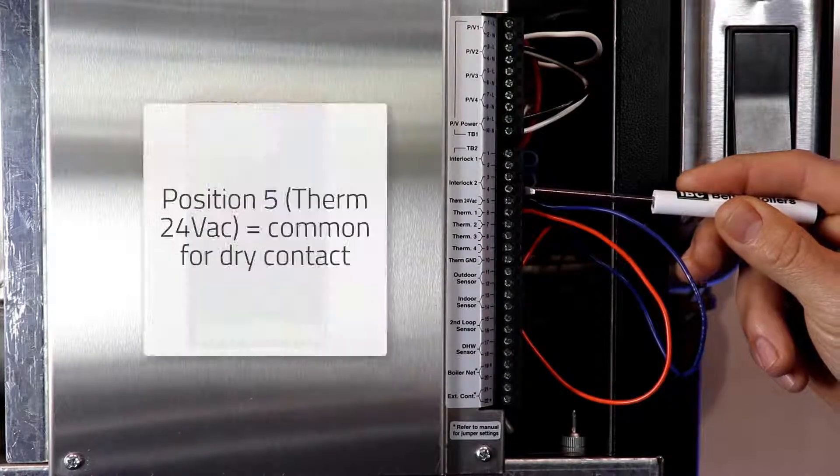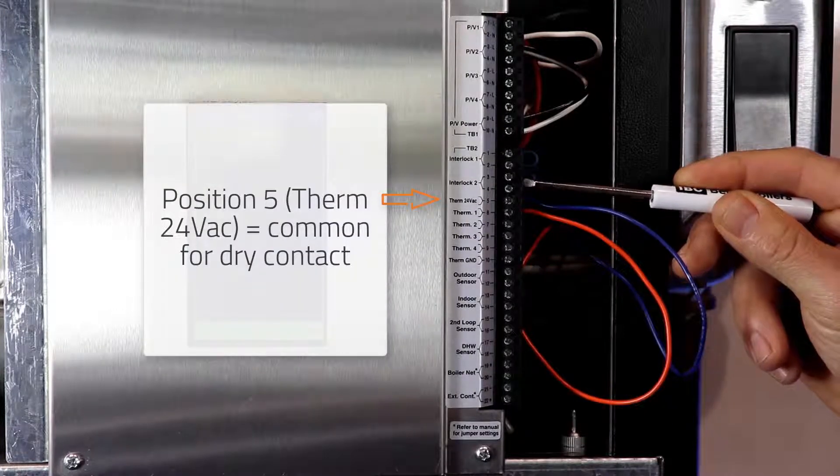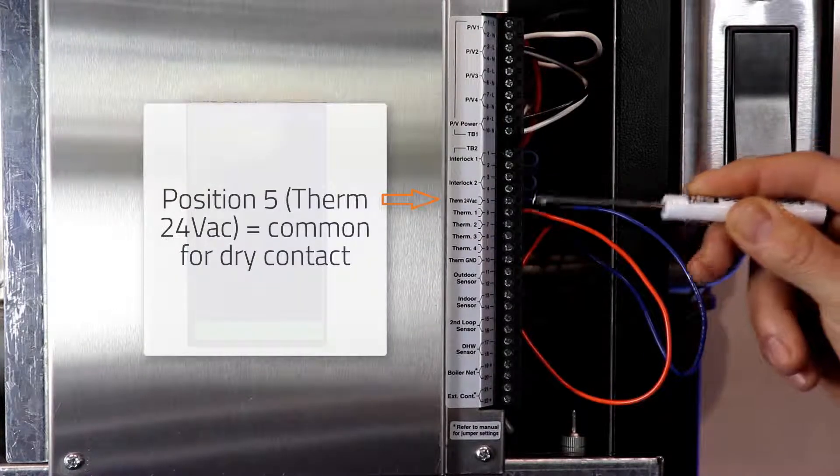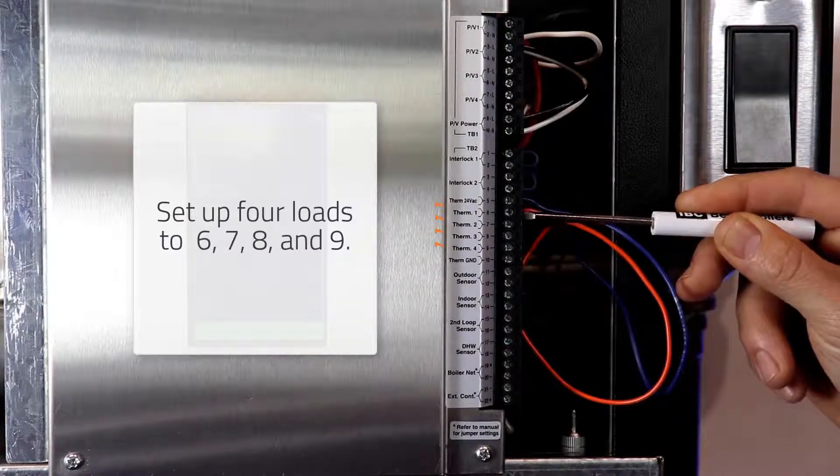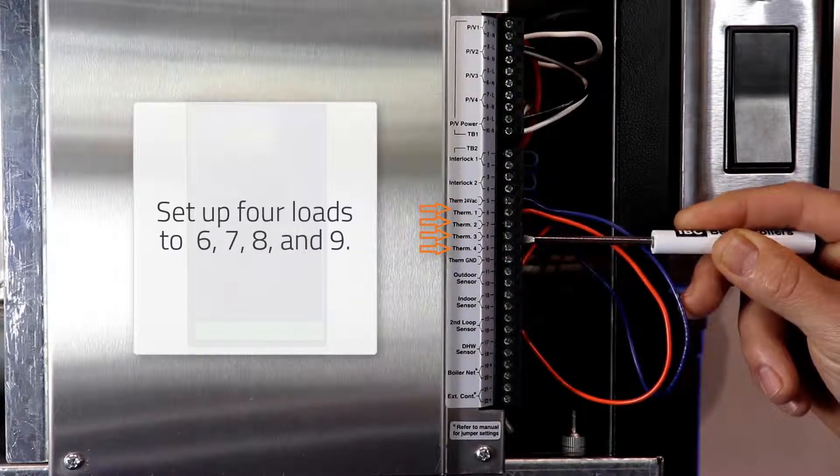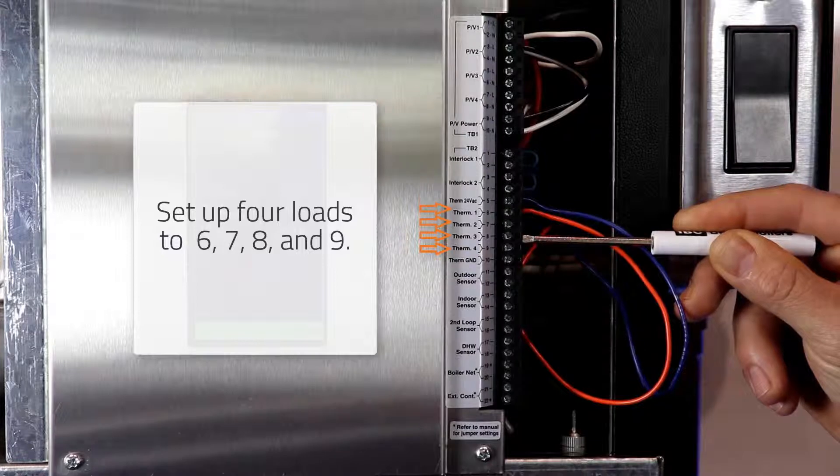Position number 5 is your common for a dry contact enable, and then position 6, 7, 8, and 9 are the 4 loads that you can set up.